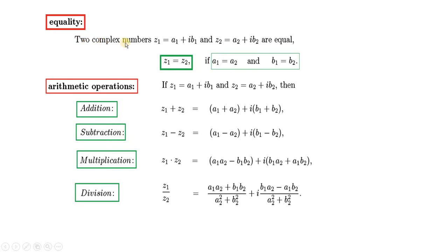Equality: two complex numbers z₁ and z₂ are equal, i.e., z₁ = z₂, if a₁ = a₂ (real parts are equal) and b₁ = b₂ (imaginary parts are equal). So two complex numbers are always equal if their real parts are equal and their imaginary parts are equal.